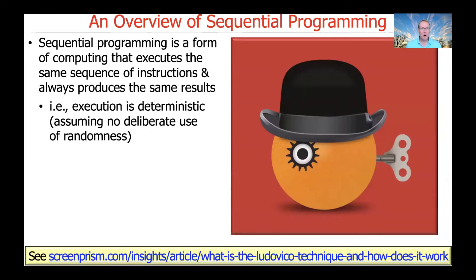The idea behind sequential programming is that the execution of the program is deterministic. That assumes we're not using randomness in some way, not using a random number generator to decide what to do next. But if you just write a normal program, and there's only one thread of control, then your programming will be sequential.